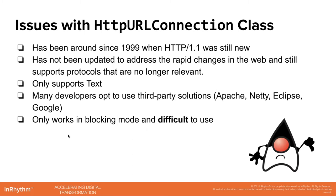As we all know, the internet has changed very drastically, and the native client has not kept up with it. It only supports text, and as we know, all internet connections today are very dynamic — much more than just text. This has driven developers to use third-party solutions, things like Eclipse or Apache HTTP clients, as well as Google's HTTP clients. On top of that, it worked in blocking mode, meaning you cannot execute any other logic or code in your application until you received the request back. So if a connection took a long time, your application was basically idle. And setting up the client itself was very difficult to use — it wasn't really reliable.